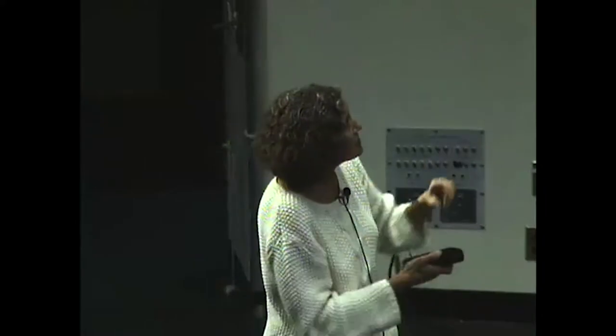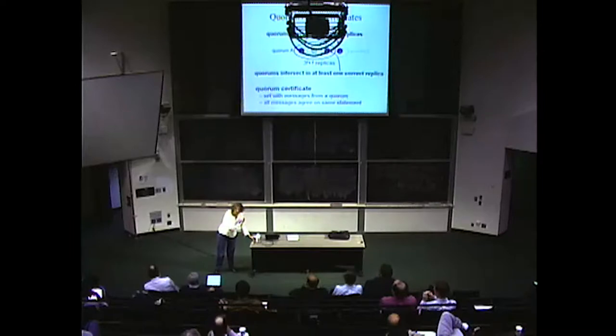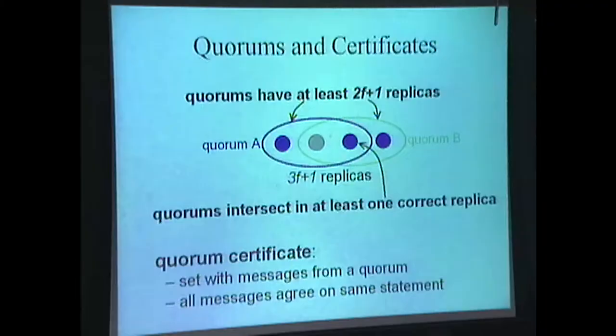Operations actually talk to everybody. A quorum certificate is a set of identical messages accumulated from a quorum — all messages agree on the same statement. Here's how we order requests: a request comes in from a client, the client sends it to the primary, and the primary chooses the sequence number — say, request 123 — and broadcasts that to all other replicas. The whole thing is encrypted. We use cryptography on every message exchanged in the system: the request from the client is encrypted with a secret key known to the replicas for that client. We use secret key cryptography because it's much cheaper than public key cryptography, but these secret keys are periodically refreshed backed by public/private key pairs.